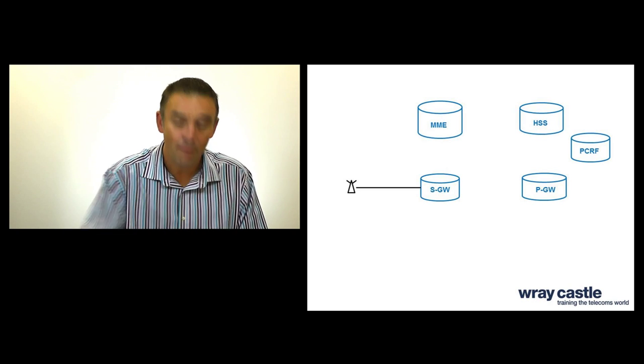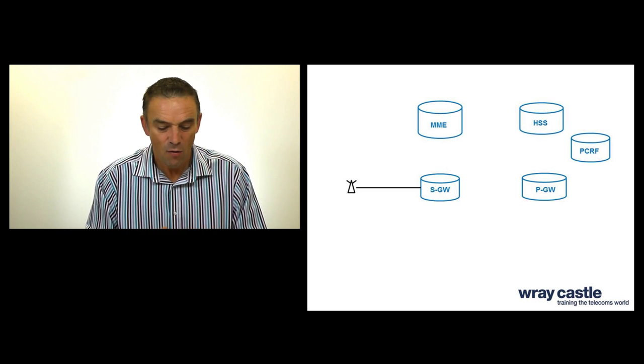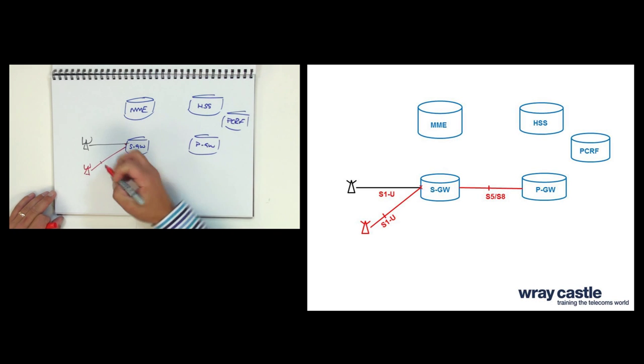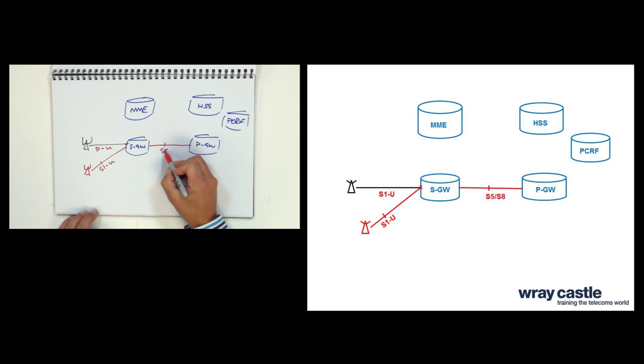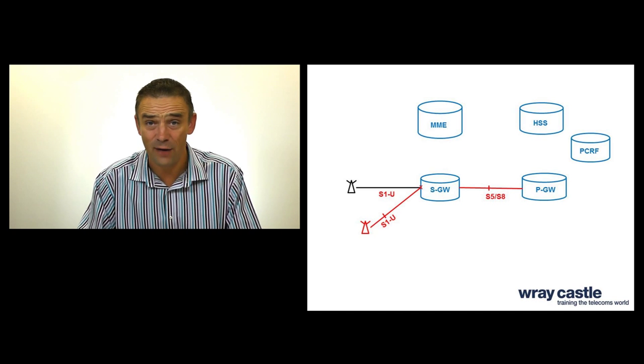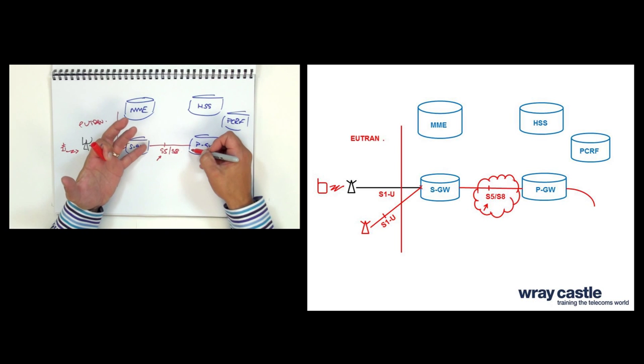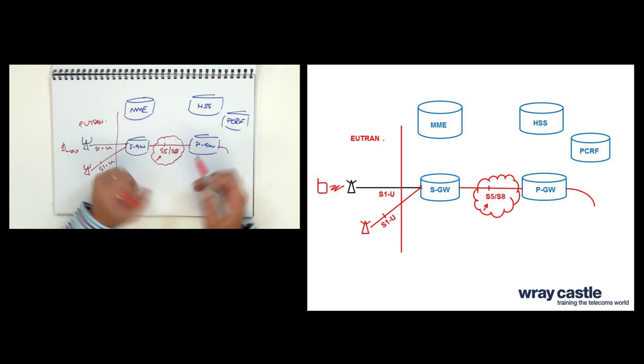So just to look at these nodes individually, we start with this first node here, the serving gateway. Now there are many functions in the serving gateway: lawful interception, differential services, code point marking, but really the main function of that serving gateway is a mobility anchor. Now the serving gateway will connect via an S1U interface to a number of ENOBs and then either S5 or S8 interface to a PDN gateway. Now the difference between S5 and S8, well it's not defined anywhere in standards other than if the serving gateway and the PDN gateway are in the same network, it's called S5. If the serving gateway and PDN gateway are in different networks, so for example if I'm roaming, if I'm being provided with service by aEUTRAN in America and I'm connected to services back in my home network, then they just call that S8. So the serving gateway connects back to the PDN gateway via S5 or S8.